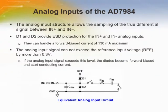The figure shows an equivalent circuit of the input stage of the AD7984. The two diodes, D1 and D2, provide ESD protection for the analog inputs, IN plus and IN minus. Care must be taken to ensure that the analog input signal does not exceed the reference input voltage, REF, by more than 0.3 volts. If the analog input signal exceeds this level, the diodes become forward biased and start conducting current.